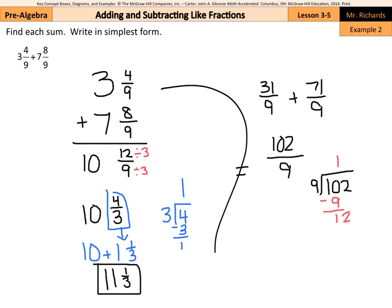9 goes into 10 once, 9 goes into 12 once, and you're left with 3. So 11 and 3 ninths, which we can simplify by dividing by 3 on top and bottom. For another way to get 11 and 1 third. Now, both methods work for addition.